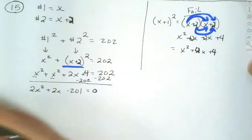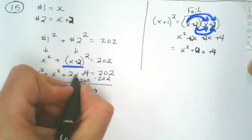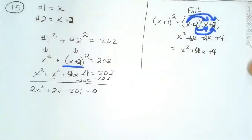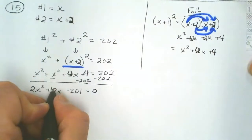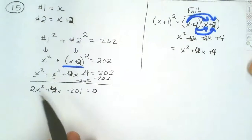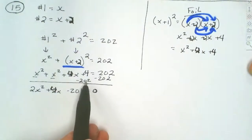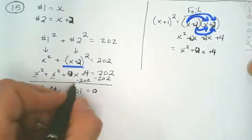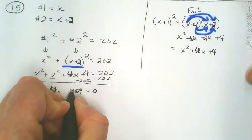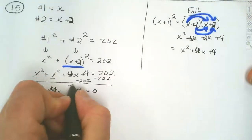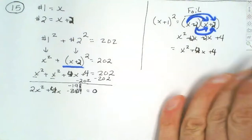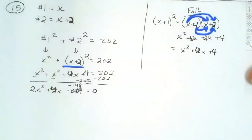Now when we add the two squared terms together, we get 2x squared plus 4x. Then we move that 202 over, making it minus 202, so we get 2x squared plus 4x minus 198 equals zero. Sorry about that mistake — the second number should have been x plus 2 instead of x plus 1.